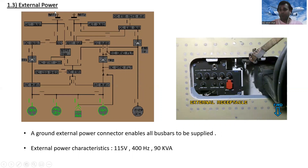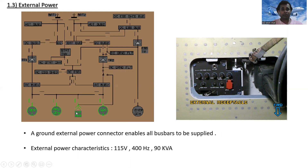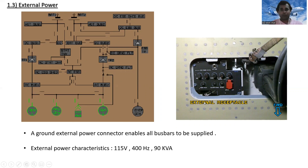Next is external power. You can see the external power receptacle. A ground external power connector enables all bus bars to be supplied. External power characteristics are 115 volts, 400 hertz, and 90 kilowatt amperes.